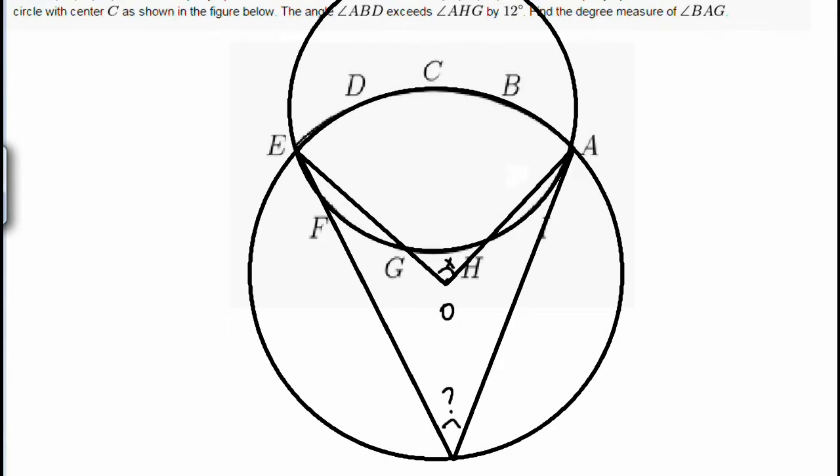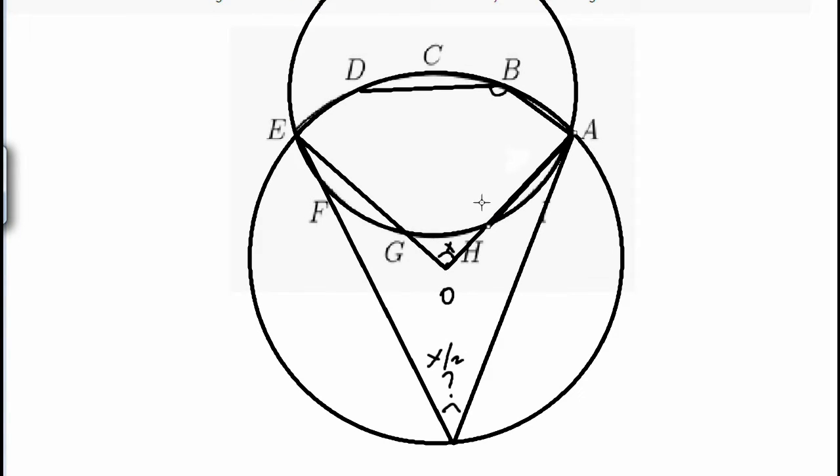So if that's going to be angle X, then this is going to be X over 2. Now, let's think about it this way. The question asks for angle ABD. So you need to find this angle. And it also asks for AHG. So we need to find this angle. So how do we do that? Let's go find the angle ABD first.